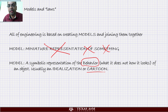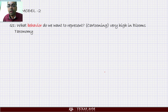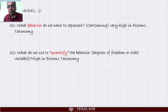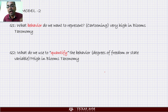We've already done some of this in previous classes. How do we decide how to model something? It starts with question number one: what behavior do we want to represent? This is very high in Bloom's taxonomy because we have to identify these kinds of behaviors. Then the next question is: what do we want to quantify? All of mathematics is about quantities — if you cannot quantify the behavior you cannot convert it into numbers. This quantification is called a degree of freedom, or a state variable, and it's also high in Bloom's taxonomy.